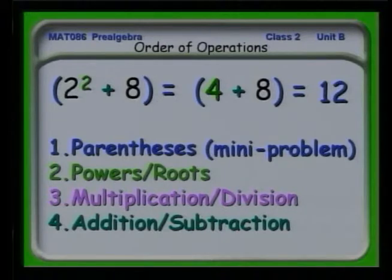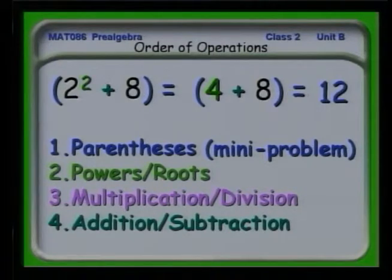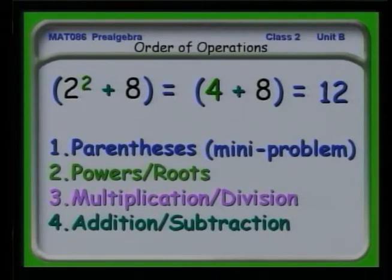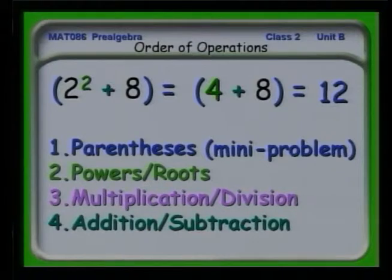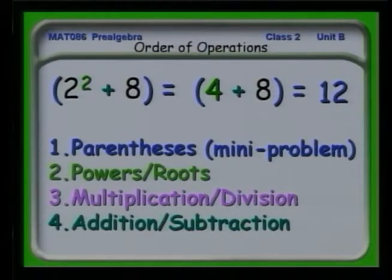Let's work on that mini-problem on a separate slide. Using the same order — parentheses, powers, roots, multiplication, division — we see there are no parentheses inside those parentheses, so we're done with step one. But we have a power: 2 squared becomes 4. Then there are no multiplications or divisions inside, but we have addition, so we add that up. The value of the quantity in the parentheses is 12.